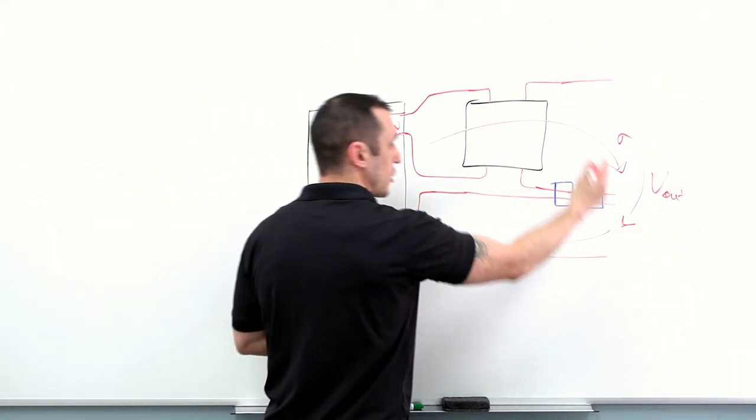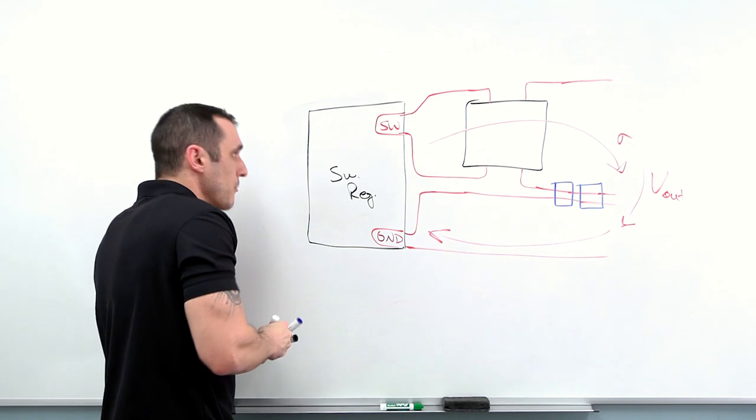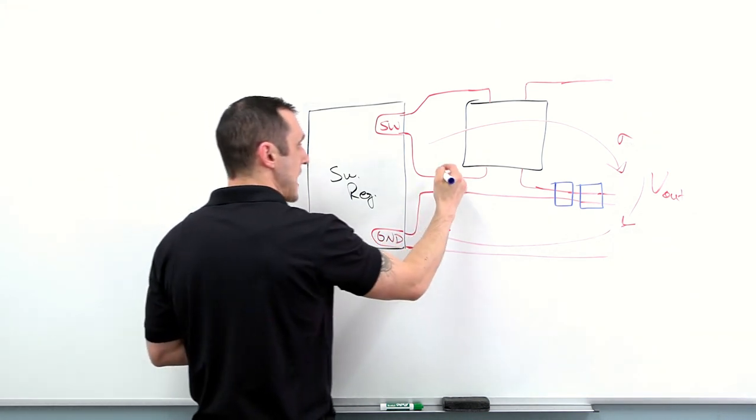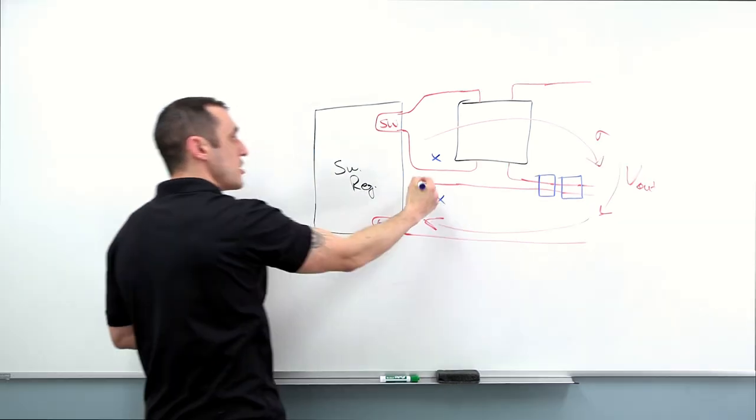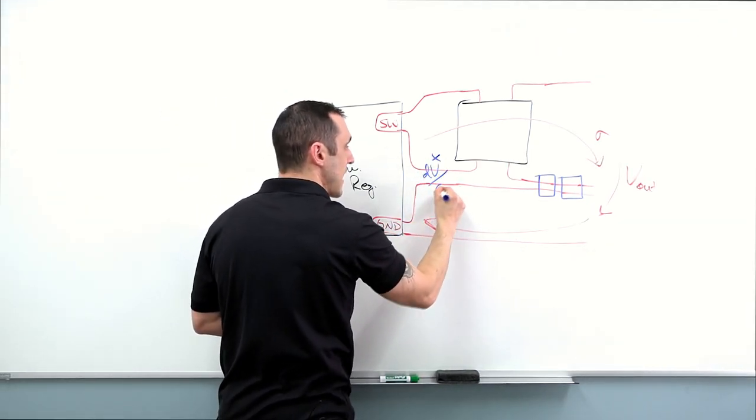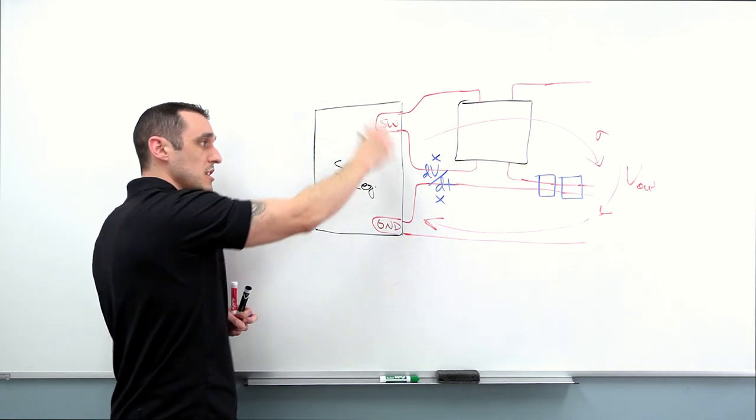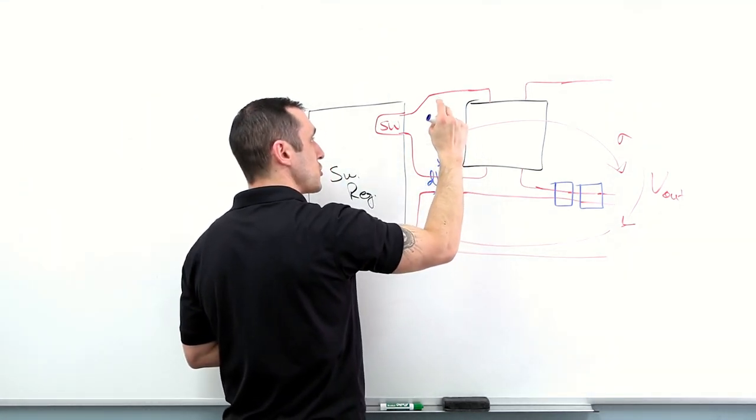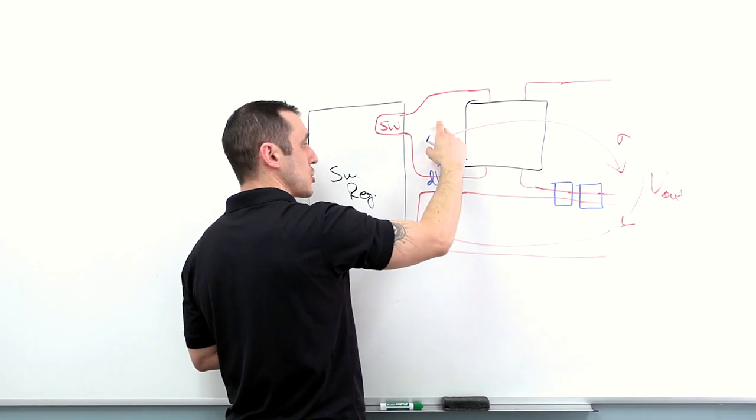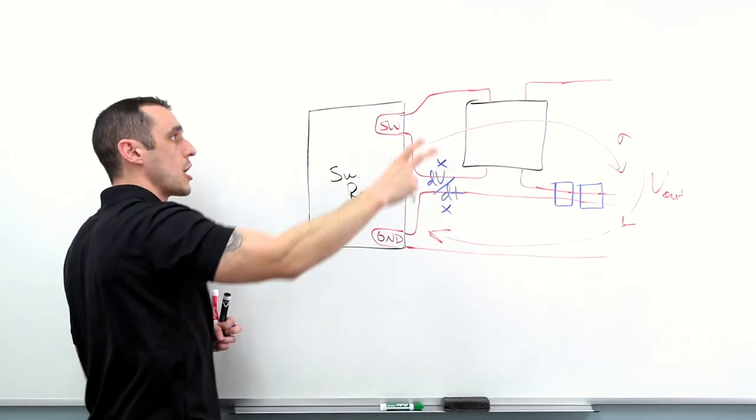So here you've already got a big current loop that you need to worry about, but then also you basically have between this point and this point, you basically have a big DV/DT value here measured between these two points. So then you want to reduce the parasitic capacitance with respect to this section of copper and any other copper that's around.